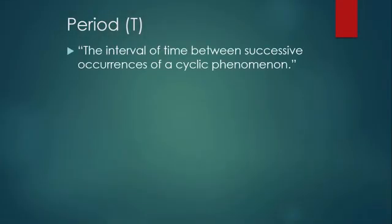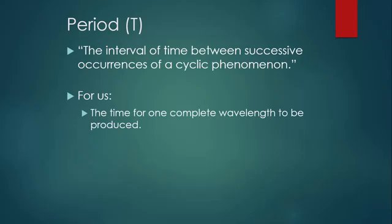Let's take a look at period. The very general definition we can write for period is that it's the interval of time between successive occurrences of a cyclic phenomenon. But don't write that. For us, period is the time for one complete wavelength to be produced. In other words, this is the time for one complete oscillation.